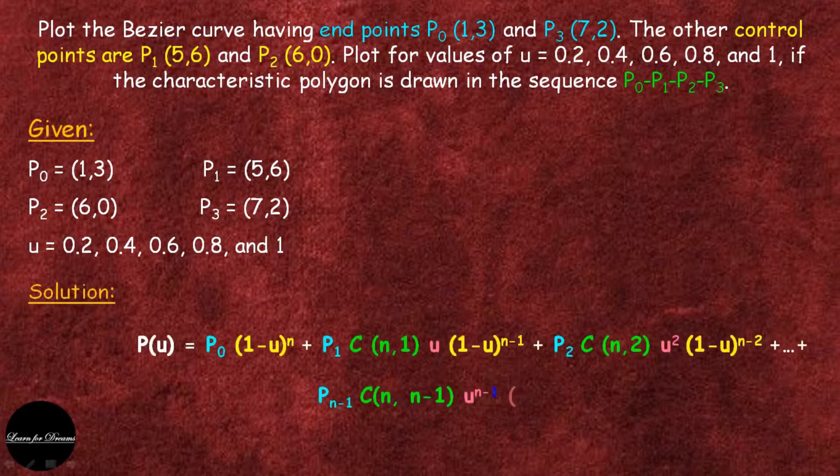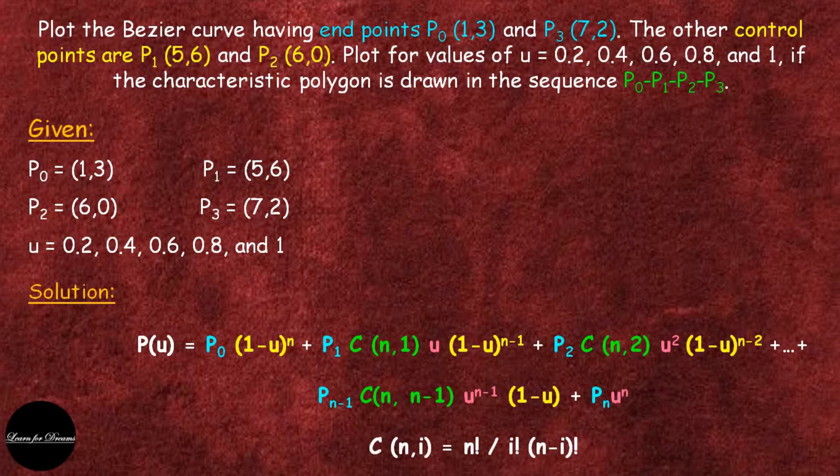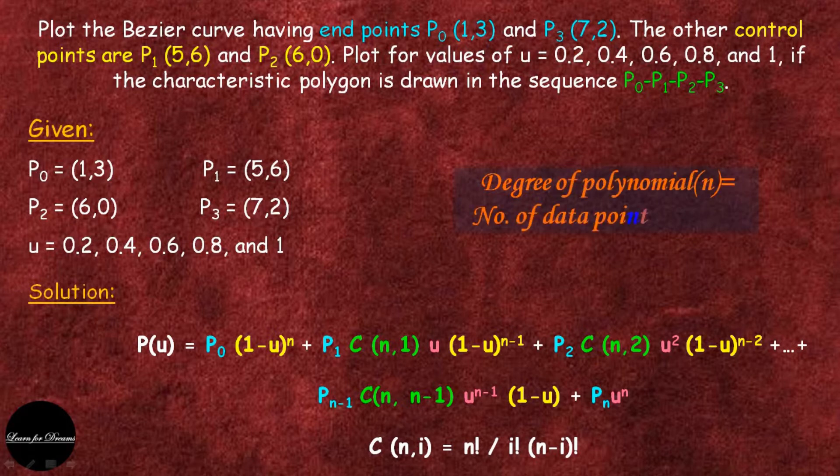This is a parametric equation for Bezier curve. Now a very important point to be noted is the value of n, that is degree of polynomial. The formula is: degree of polynomial n is equal to number of data points minus 1.